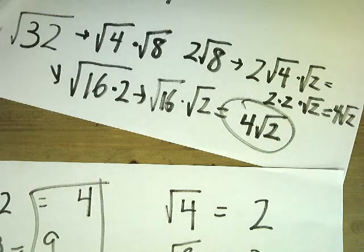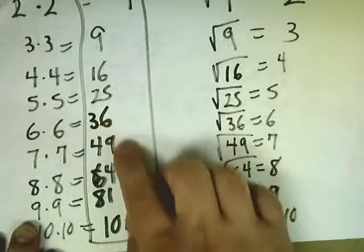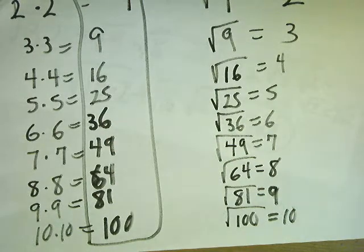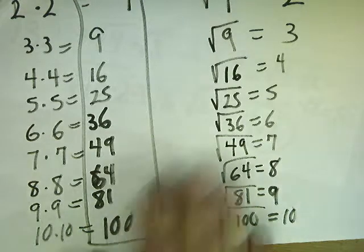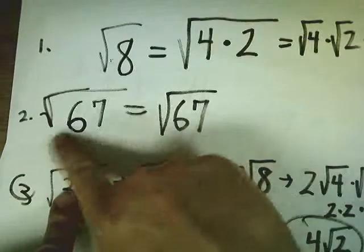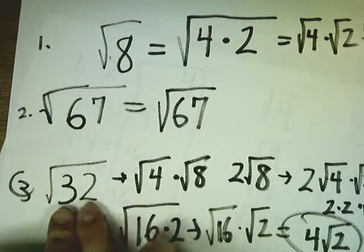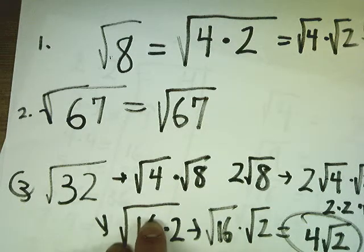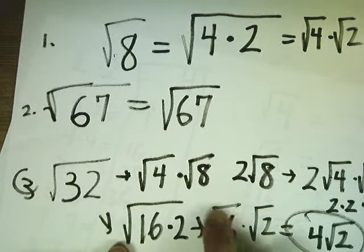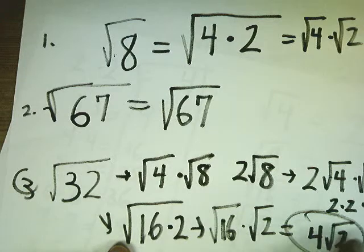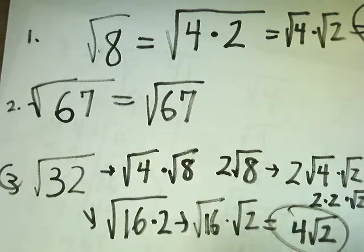So remember, in order to put things in simplest radical form, you take your list of squares — 4, 9, 16, 25, 36, 49, 64, 81, and so on — and divide the number underneath the radical (in this case 32 or 67) and see if you get an integer. If you do, split it up: break it into the square root of the perfect square times the integer answer, evaluate that square root, and place it outside the radical. I will not accept answers in decimal form anymore — that's over. Answers must be in simplest radical form.